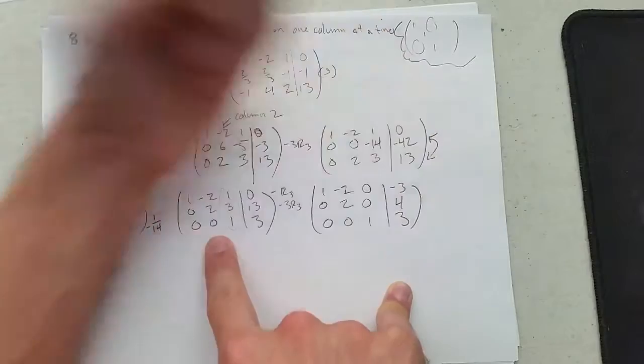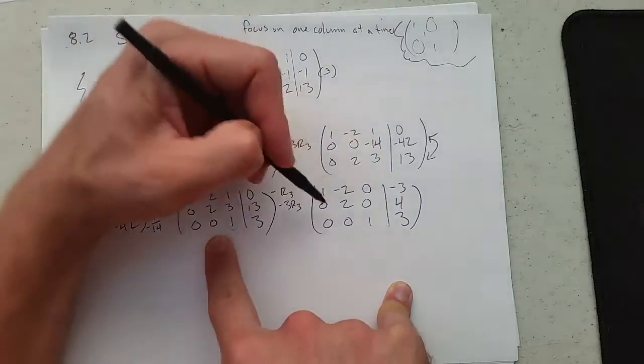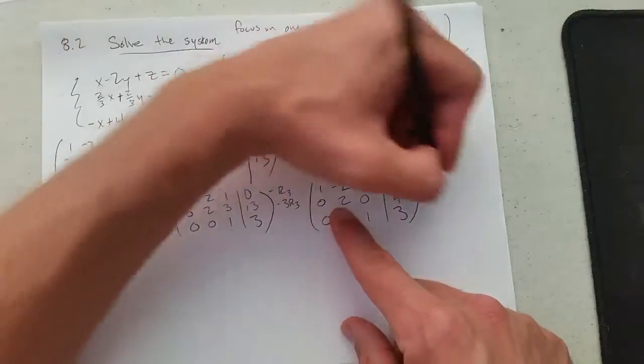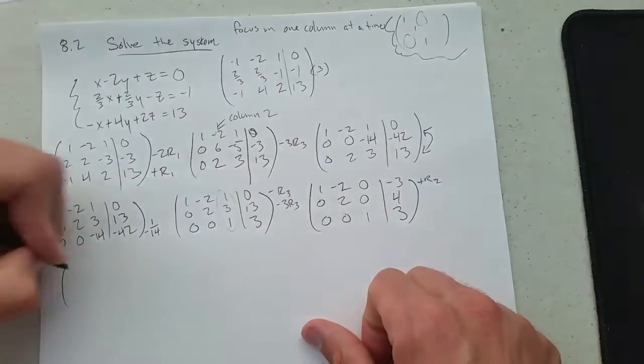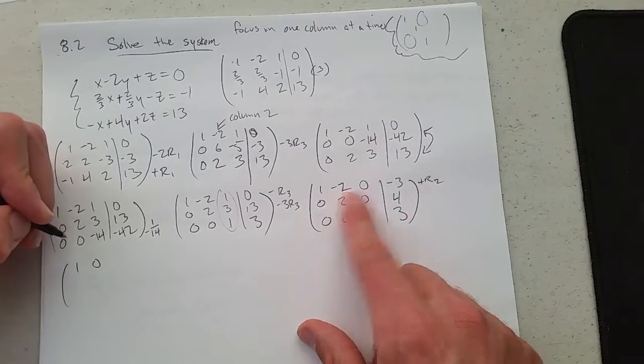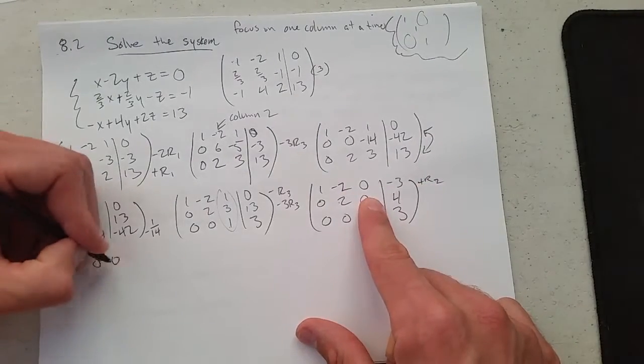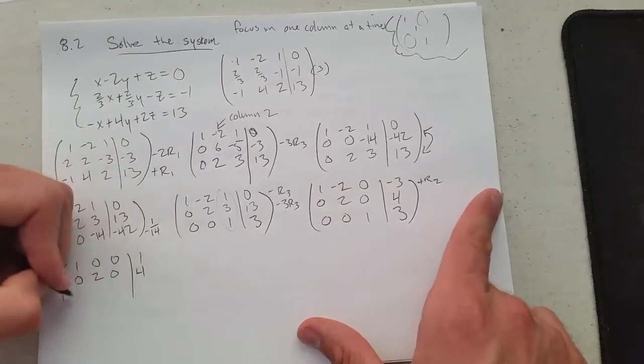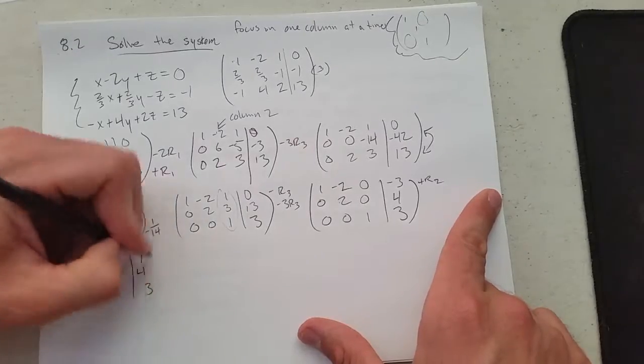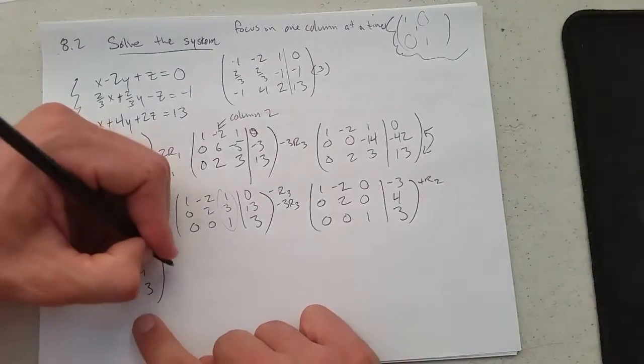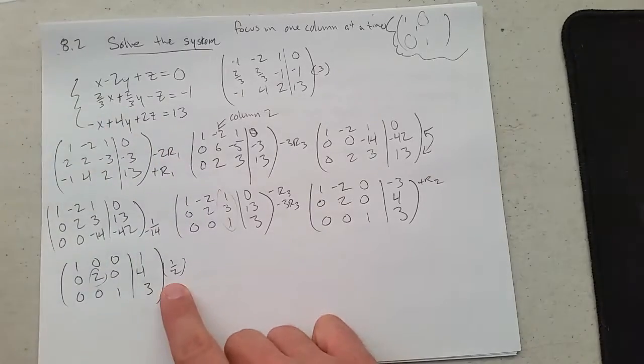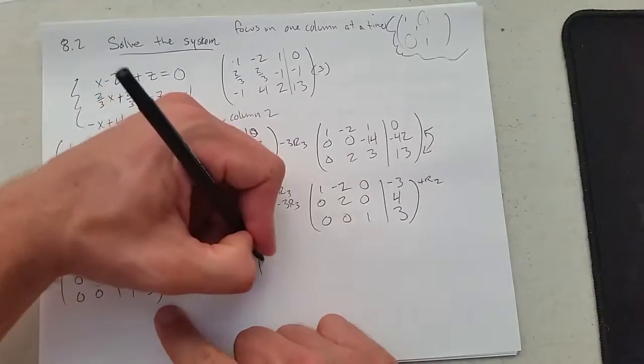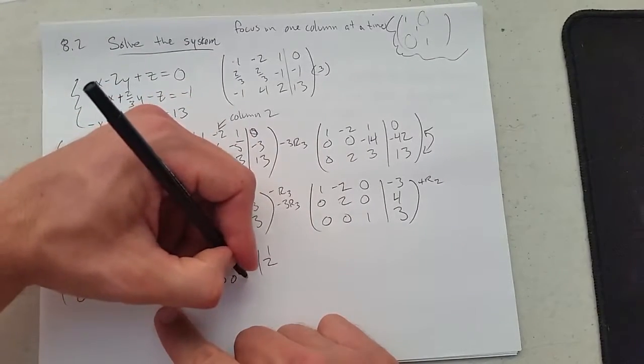Copy. Last row. Now I can take this 2 and knock out the negative 2. Plus row 2. 1, 0, 0. 1, 0, 0, 0, 1, 3. Last up, get that 2 to be a 1. I'm multiplying by a half now. 0, 1, 0, 2, 0, 0, 1, 3.